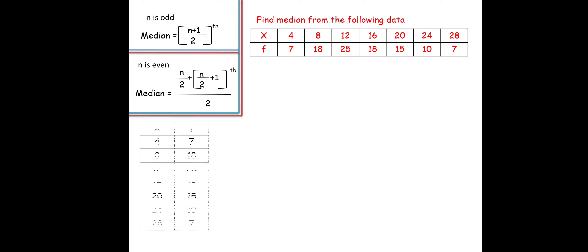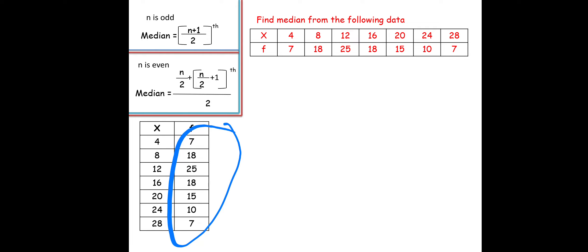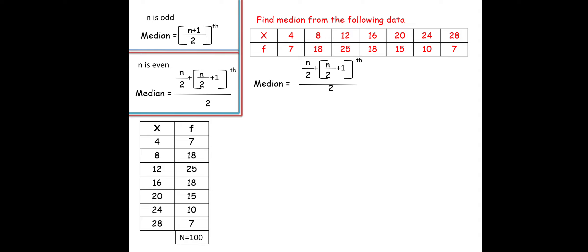We rewrite the table and first check the value of n: 7 + 18 + 25 + 18 + 15 + 10 + 7 = 100. Since 100 is even, we use the even formula. The formula is: median = [(n/2)th + (n/2 + 1)th observation] / 2. Substituting n = 100: (100/2) + (100/2 + 1) divided by 2.